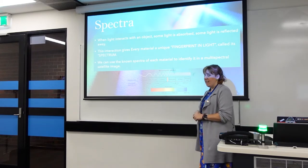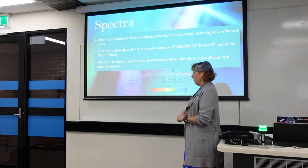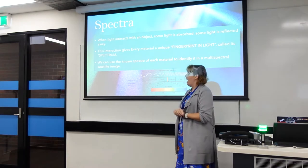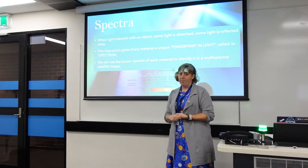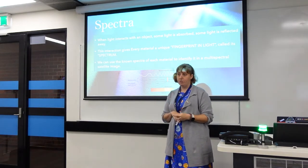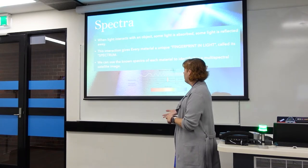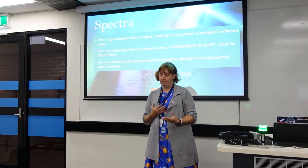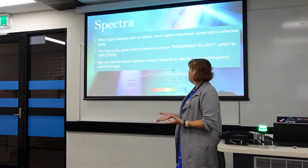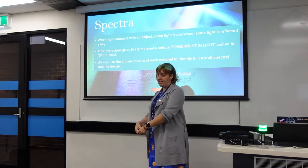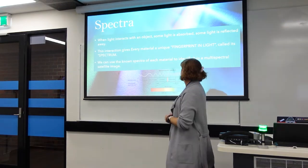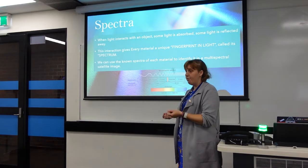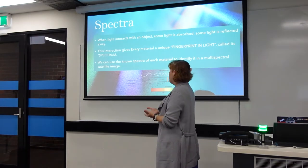The key thing really is to think about spectra. That's the one science thing we're going to talk about — spectra. Spectra is really like a fingerprint. Every human being has a unique fingerprint, and really it's the same with materials. Every material has a unique fingerprint in light, and we call it its spectrum. When light interacts with an object, some of that light is absorbed and some of it is reflected — it bounces off the object. That interaction gives every object its unique fingerprint in light.